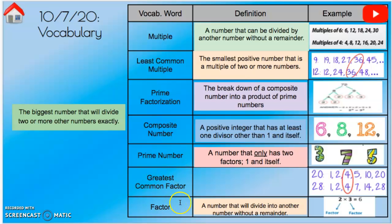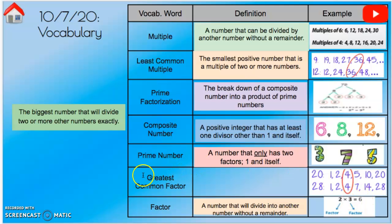A factor is a number that will divide into another number without a remainder. For example, the factors of six include two and three, because two times three equals six — both two and three are factors because they divide into six evenly. Next, the greatest common factor, or GCF.